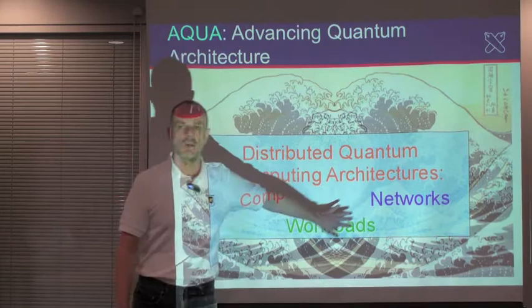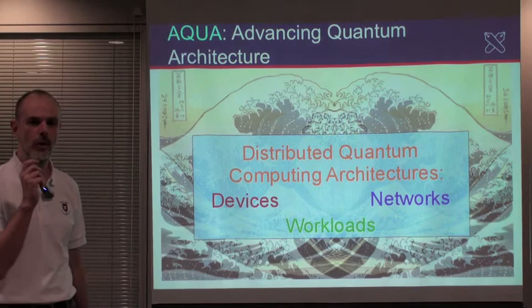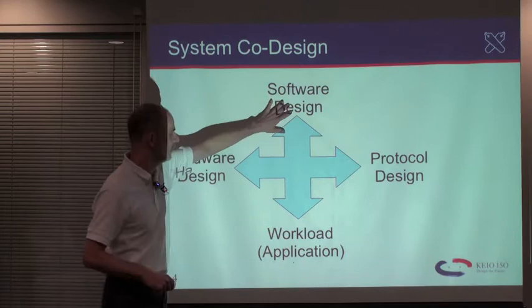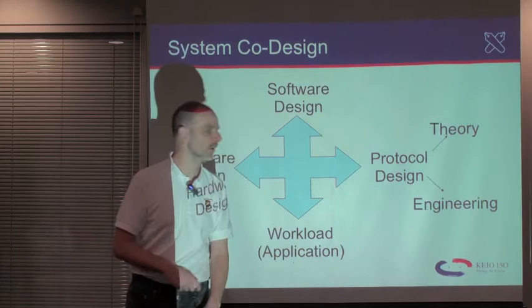My group at Keio's Shonan Fujisawa campus, we call the Aqua Group for Advancing Quantum Architecture, and we're working on distributed quantum computing architectures in three areas: devices for quantum computation, networks, and whenever you are designing an actual computing system you have to have some understanding of the workload. The process of design is what we call system co-design. Software design, hardware design, the workload or the application — those all figure in together. We're also working in networks, so protocol design comes in as well, including both the theory and engineering of network protocols.